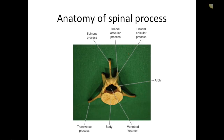Looking at an individual spinal vertebra — singular is vertebra, plural is vertebrae. The anatomy includes the spinous process, cranial articular process, caudal articular process, arch, body, vertebral foramen, and transverse process. I don't need you to know extremely high levels of detail, but you should know what I'm talking about when I reference an elongated transverse process or an elongated spinous process — those are the two I'll use most often.